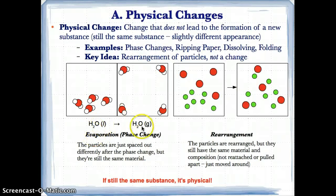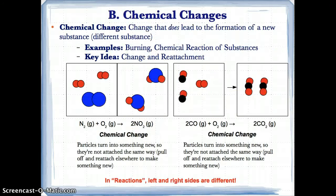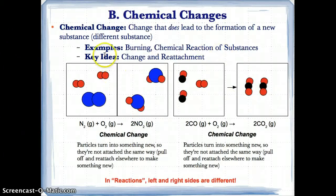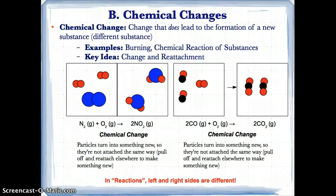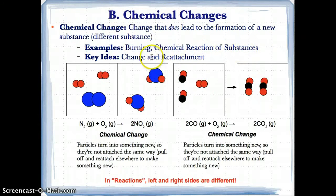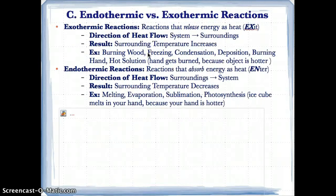If the left side and right sides are the same substances, it's a physical change. If the left side and right sides are different substances, it's a chemical change. On particle diagrams, if you just space them out differently or rearrange them, that's a physical change. If you break things apart and reattach them to make something new, that's a chemical change. Main examples of physical change are phase changes and dissolving; main examples of chemical change are burning and chemical reactions.